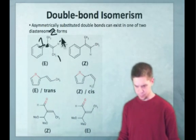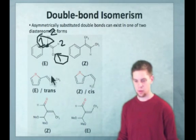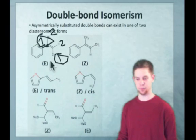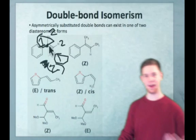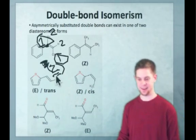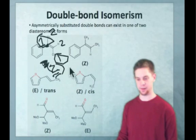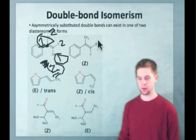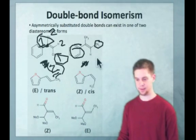What we see here is that the two groups of higher priority are on the same side of the double bond — I actually mistakenly labeled this as E; this should be labeled as the Z isomer. The way I remember it is 'Z — Zame Zide': the two groups of higher priority are on the same side of the double bond. Coming over to the other structure, the two groups of higher priority, which I've circled here, are on opposite sides of the double bond, so we call this the E isomer.